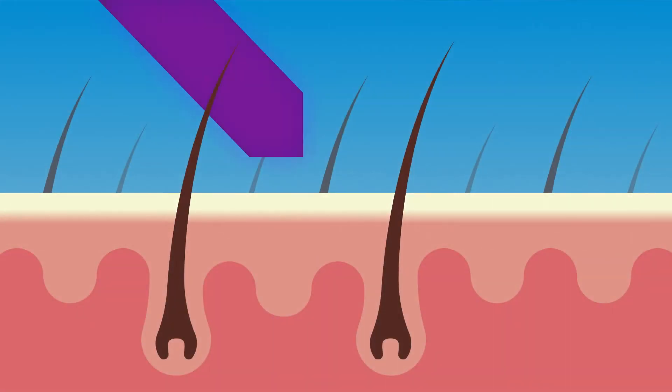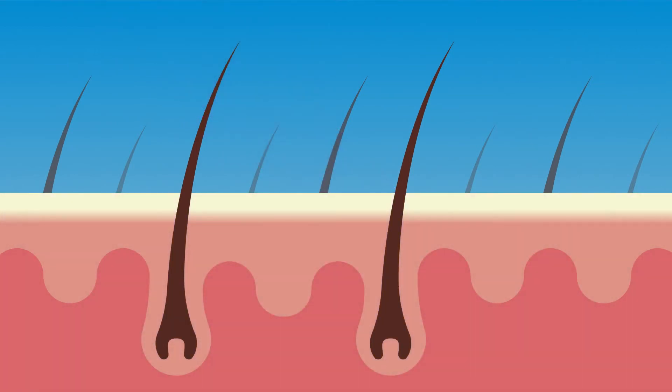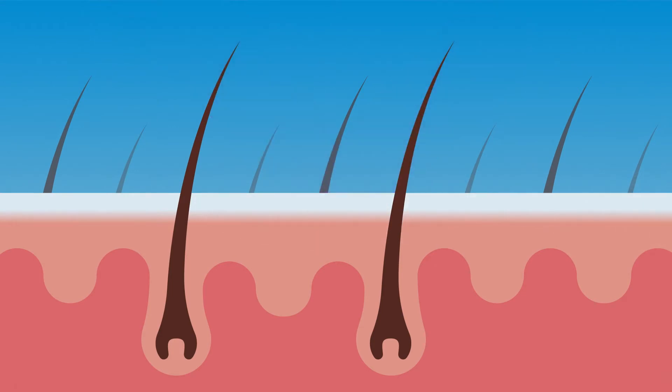Sunscreen protects your skin against harmful UV radiation, either organically by absorbing UV light, or on a mineral basis by reflecting the UV light.